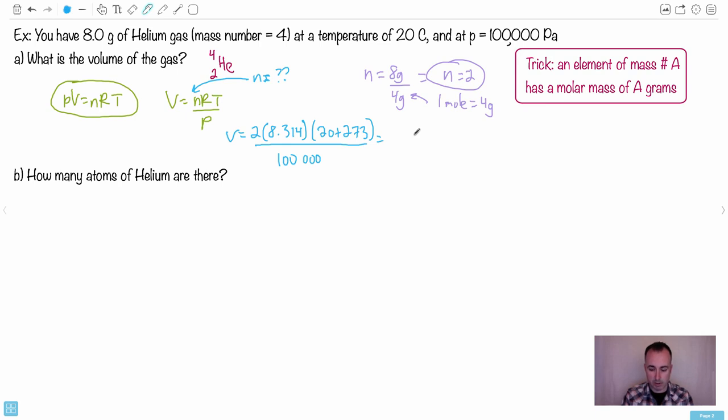And let's try that out. So we'll do 8.314 times 2 times 293. I get that, I divide that by 100,000, and I end up with a volume of 0.04938, something like that. Let's look at how many decimals I should use. I should use two, so I could say the volume is 4.9, let's say, times 10 to the negative 2 meters cubed.